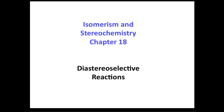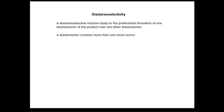We're going to look at diastereoselective reactions, which is taken from the isomerism and stereochemistry chapter. A diastereoselective reaction is a reaction that leads to the preferential formation of one diastereoisomer of the product over the other diastereoisomer.